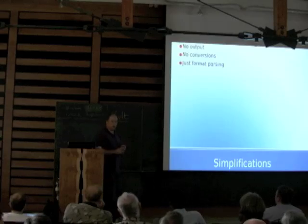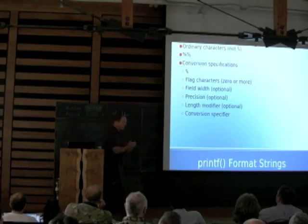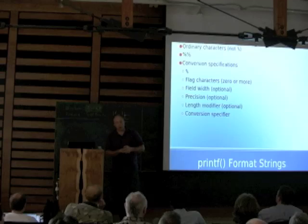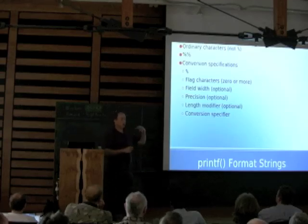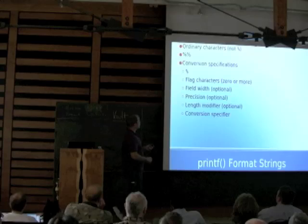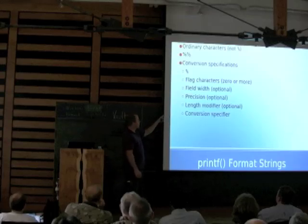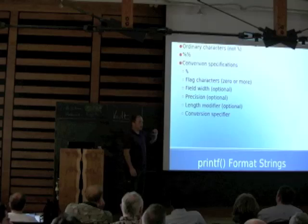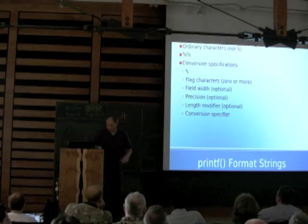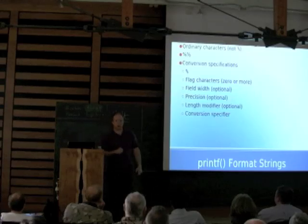In order to fit this within the time allotted we have to make a few simplifications. What we're going to develop here is not going to do any output and it's not going to do any conversions — we're not going to take an integer argument and convert it into a string. Instead we're going to focus just on the parsing. Format strings have ordinary characters — anything that's not a percent sign — a doubled percent sign which maps to a single percent on the output, and then conversion specifications. Conversion specifications start with a percent sign, then there can be zero or more flag characters, an optional field width, an optional precision, an optional length modifier, and then the conversion specifier.